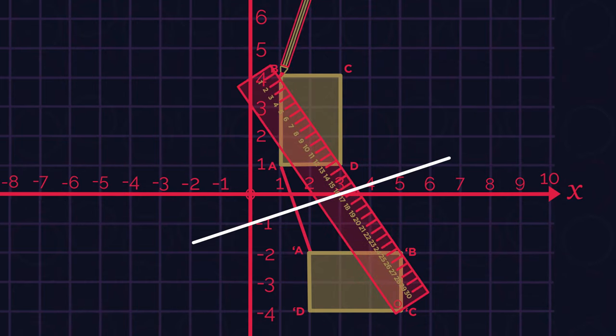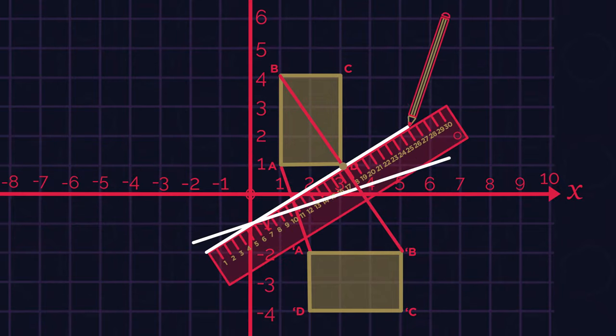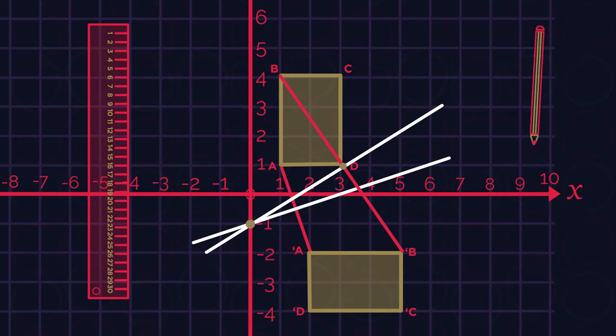Now do the exact same thing but for the joining points B and apostrophe B, where the two lines cross is the centre of rotation. So at 0, negative 1. Simple.